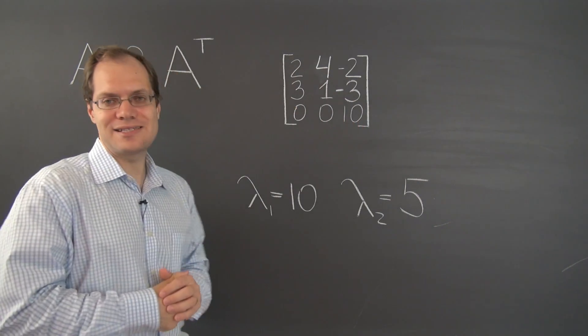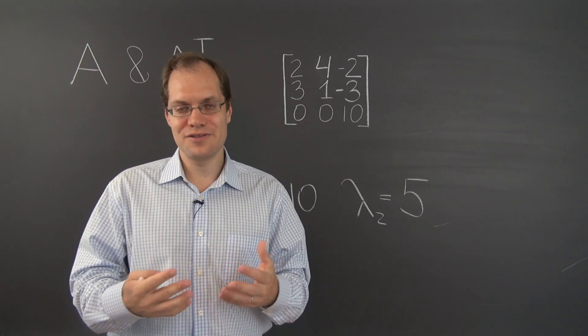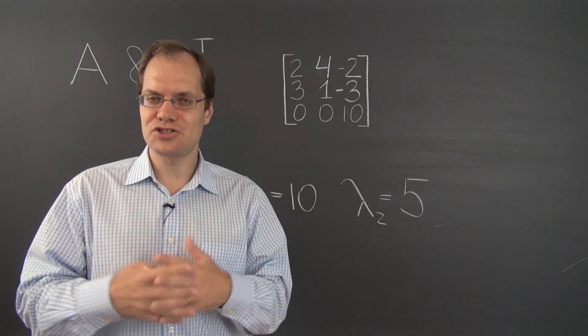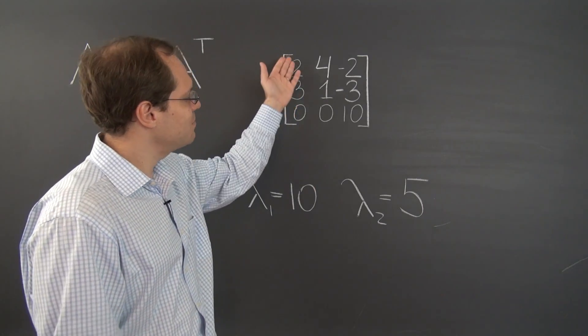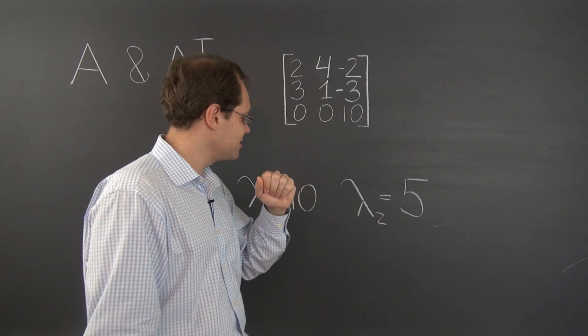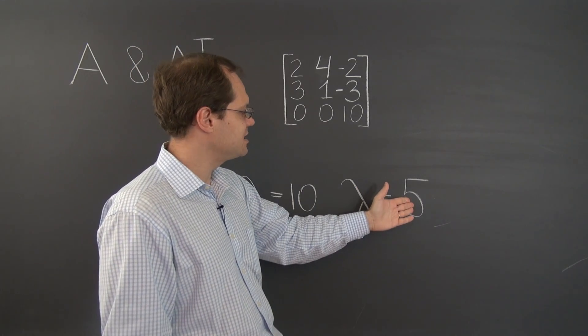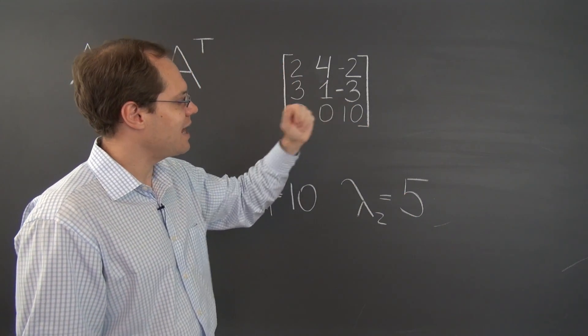And once again, the third eigenvalue, this has nothing to do with A and A transpose having identical eigenvalues. The third eigenvalue can be easily determined from the trace. These two add up to 15. All three add up to 13.